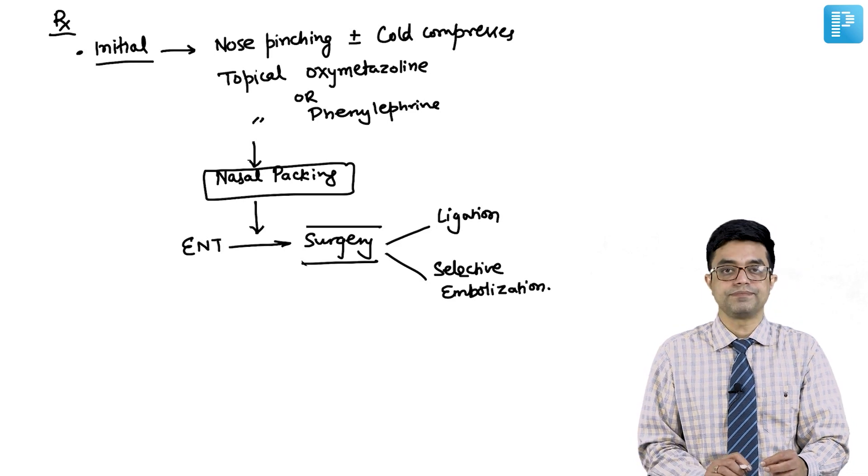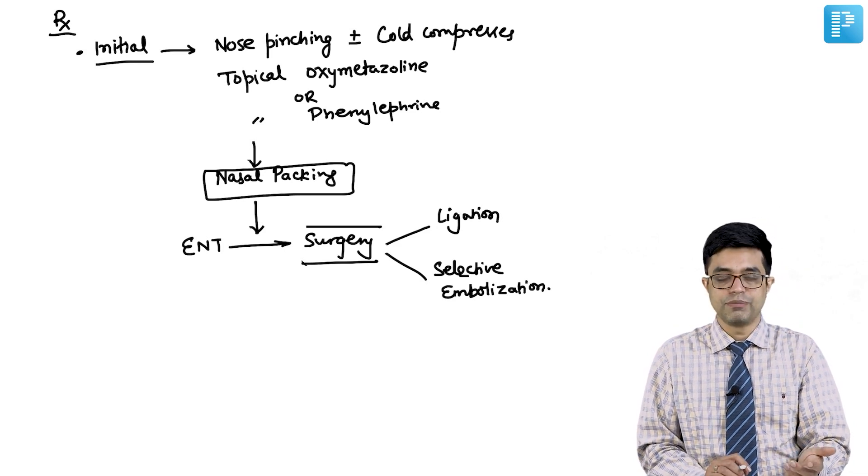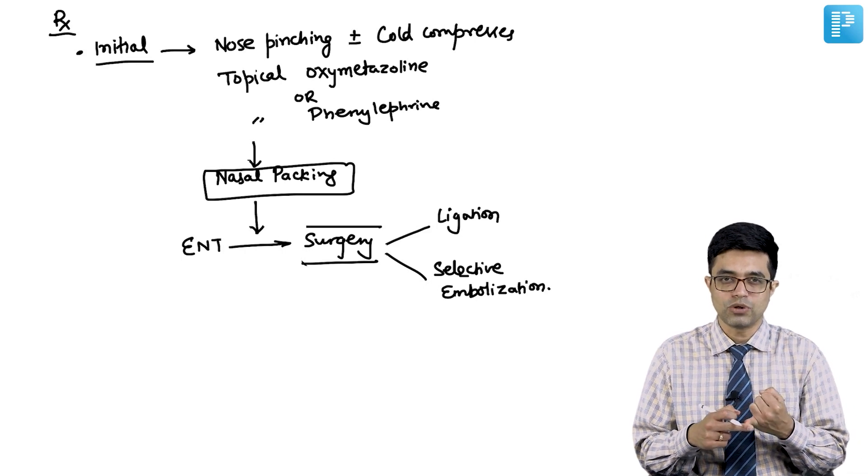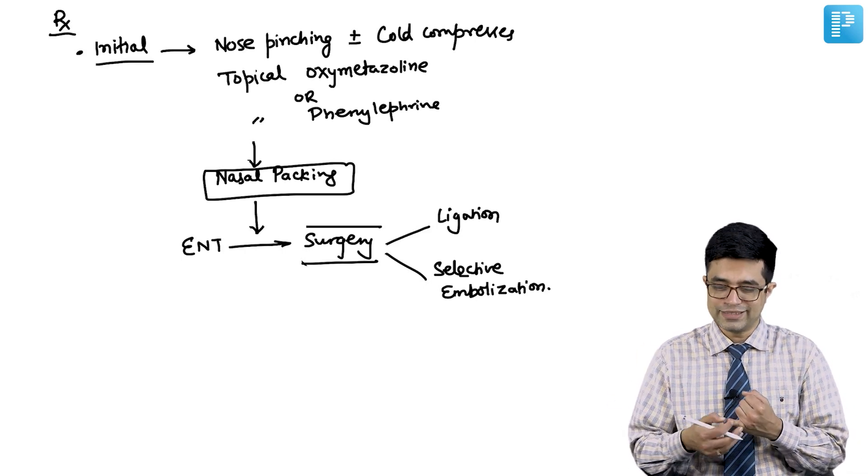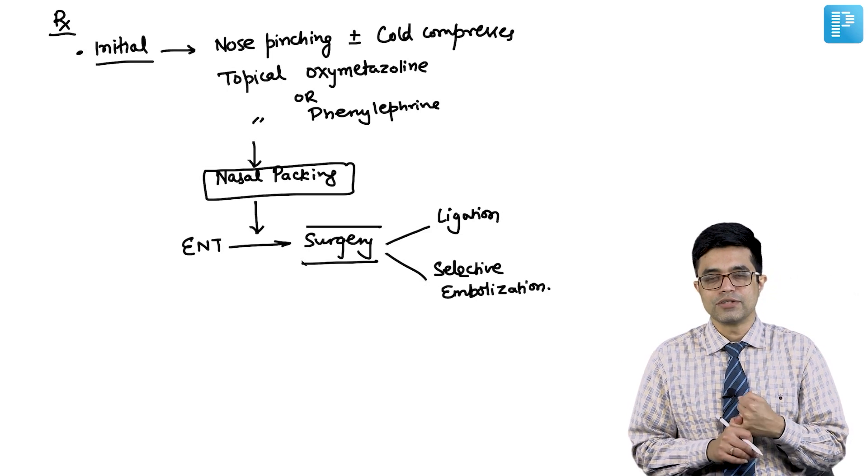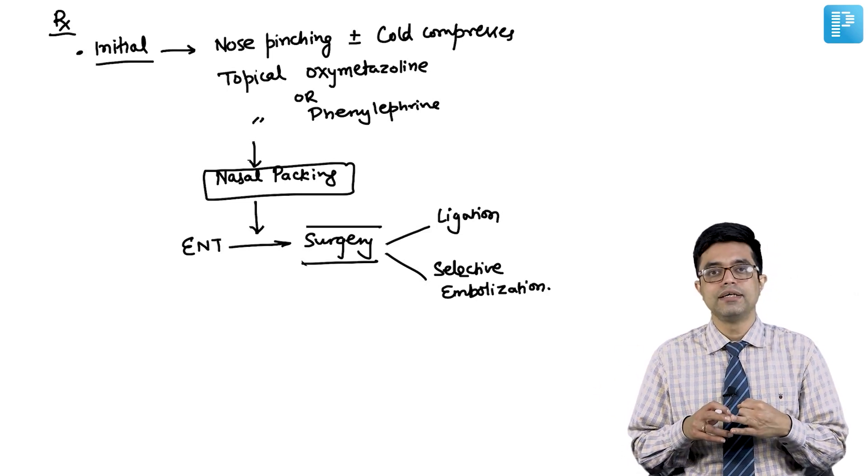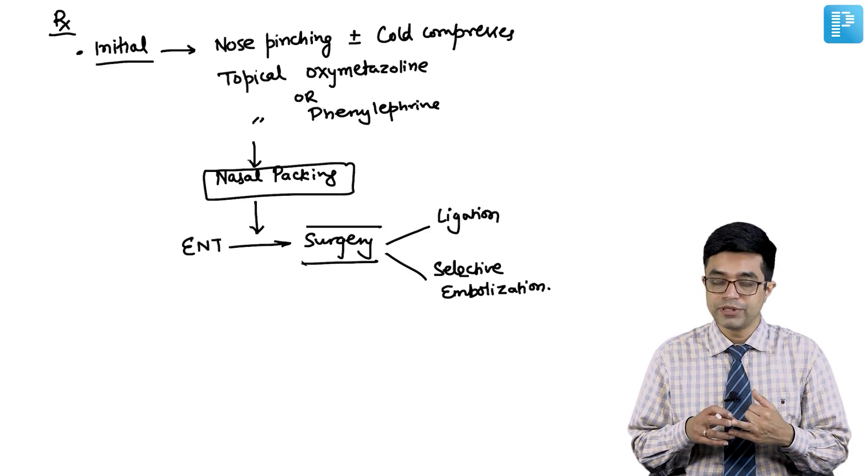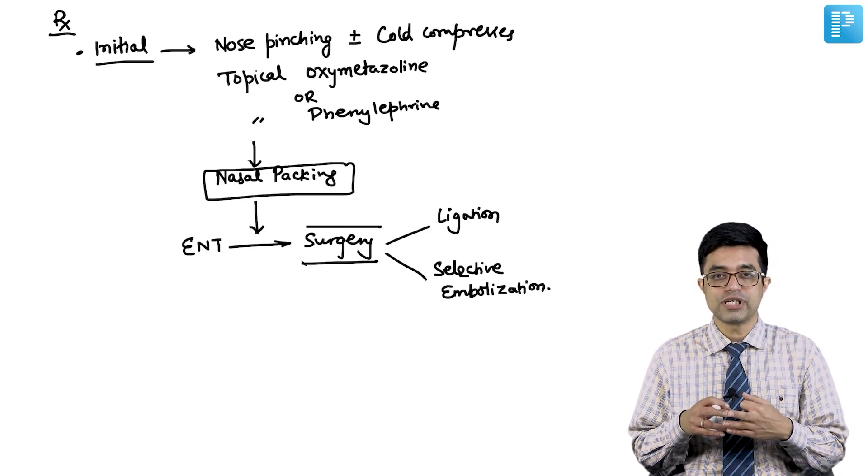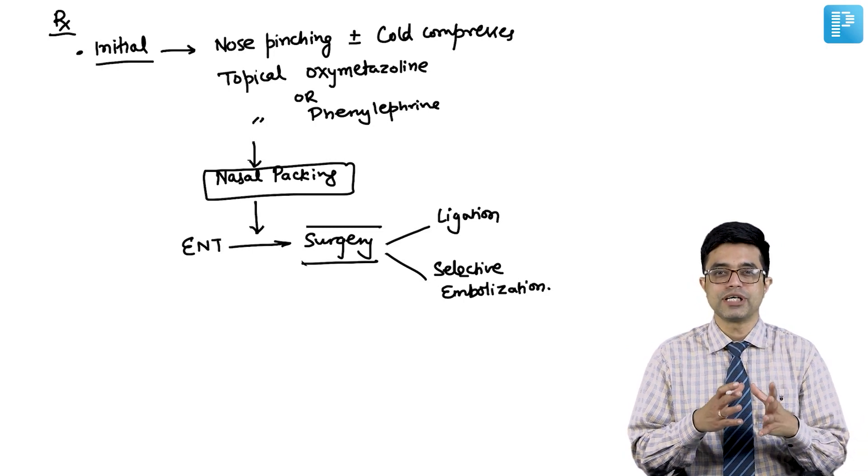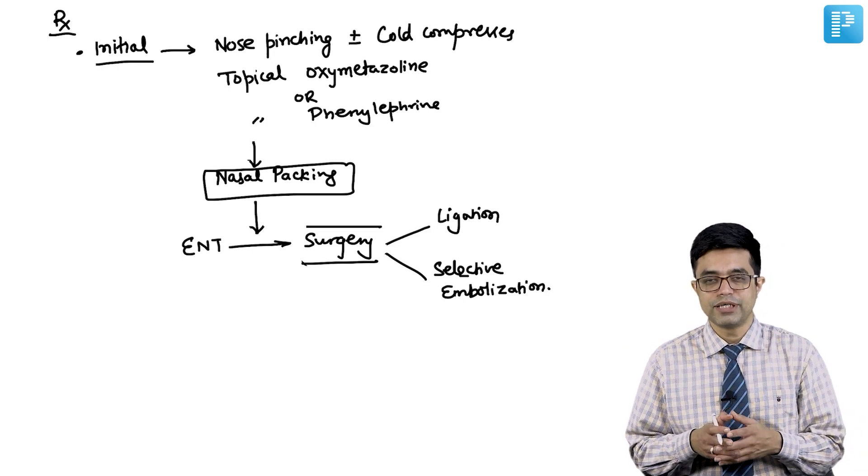Selective embolization, and remember prevention should be done in the form of avoiding undue use of topical steroids. All these vasoactive and vasoconstrictor agents, their routine use should be avoided. Secondly, habit of nose picking should be avoided. And thirdly, if a child is having recurrent epistaxis, proper management and workup of the child needs to be done.